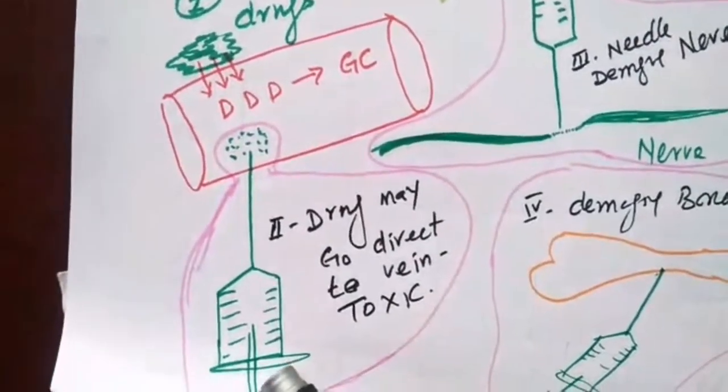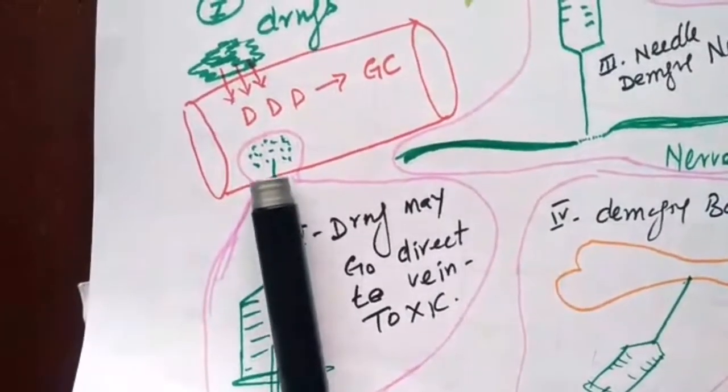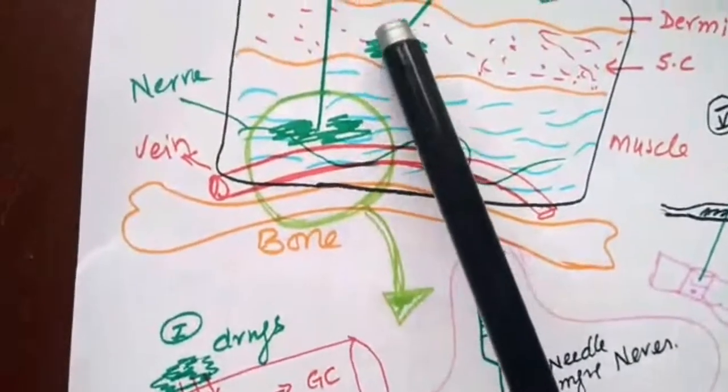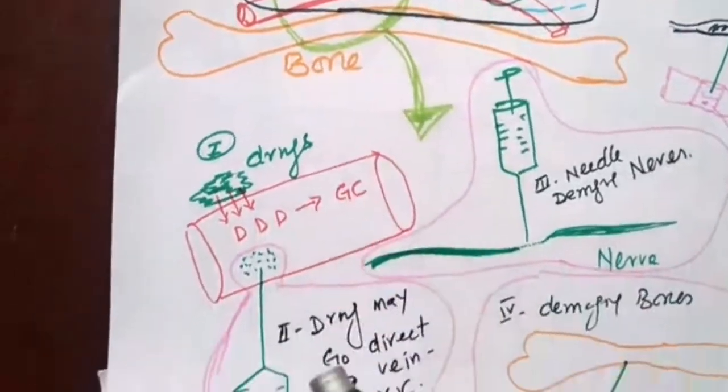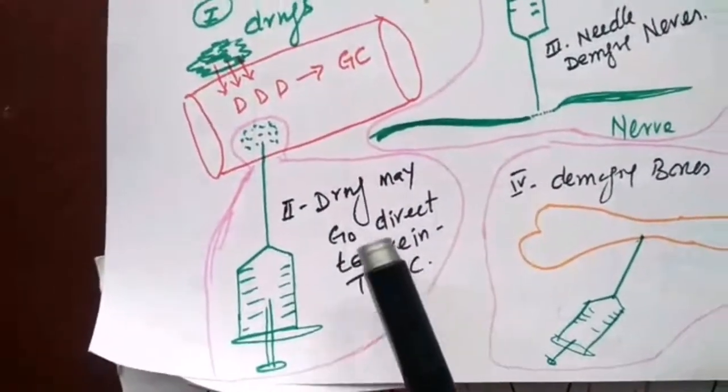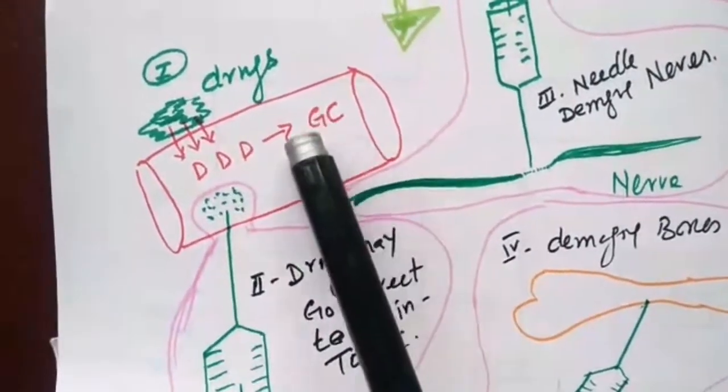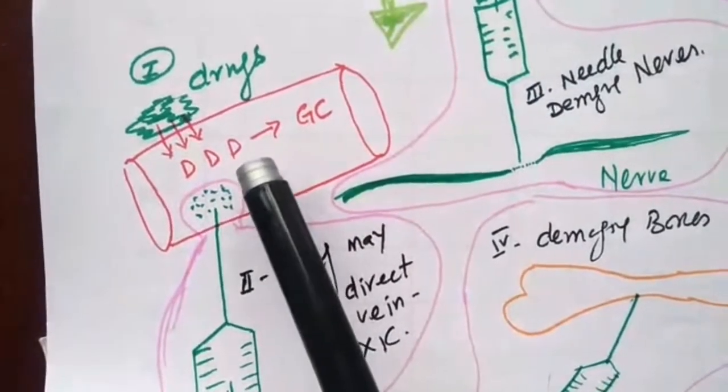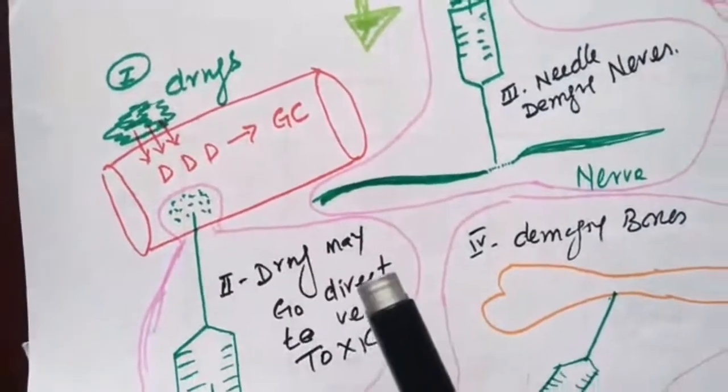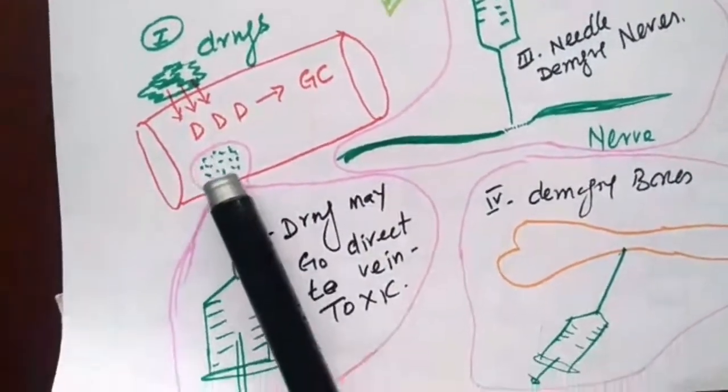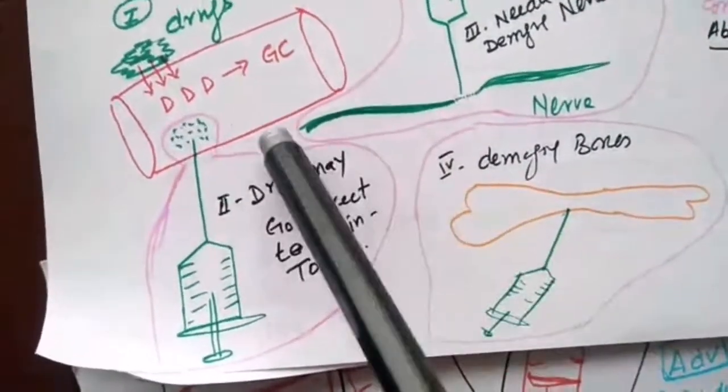Sometimes when injecting intramuscularly, the injection goes toward the vein while crossing the muscle. If we directly inject IM and it mistakenly goes into the vein, the drug will become IV. You are giving IM but it actually becomes IV. They may cause severe toxicity. It is very important when you insert the injection in the muscle.